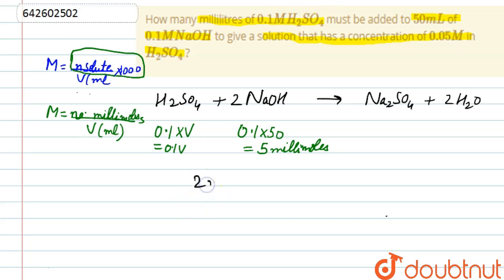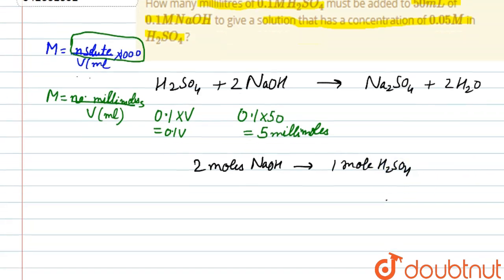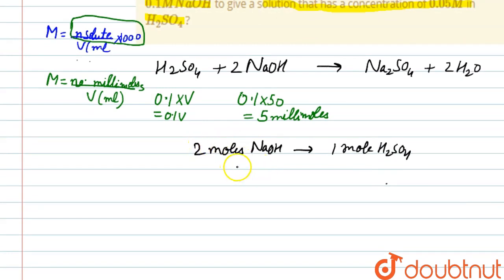2 moles of NaOH require 1 mole of H2SO4. This is according to stoichiometry. So 5 millimoles of NaOH will require how many moles of H2SO4? That will be 2.5 millimoles of H2SO4.